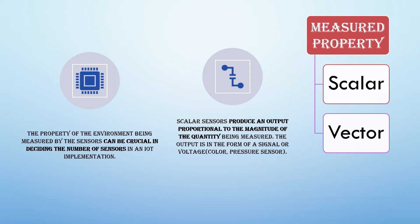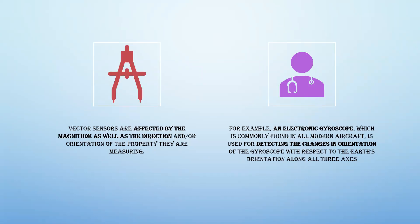Based on measured property, sensors are divided into scalar and vector. A scalar sensor gives an output proportional to the magnitude of the quantity. This is crucial when designing the number of sensors for implementing an IoT device. A vector sensor is affected by both magnitude and direction. For example, a magnetic compass or electronic gyroscope is a vector sensor — it detects orientation and helps people traveling at sea know which direction is east, west, north, or south.